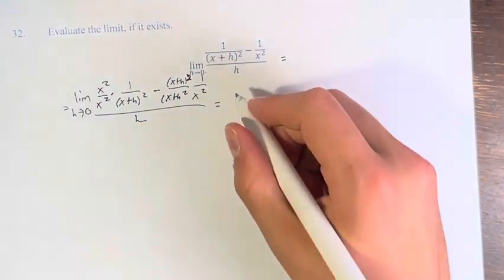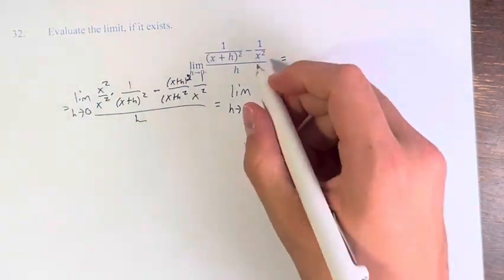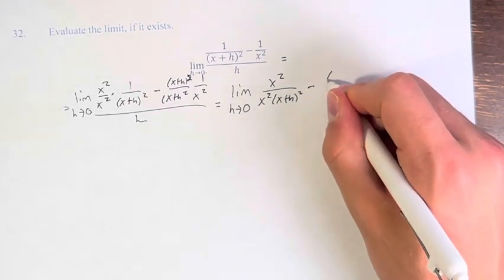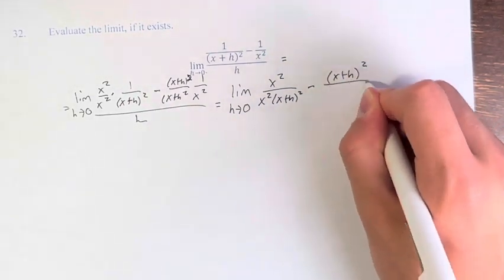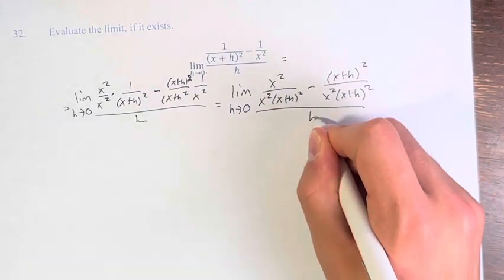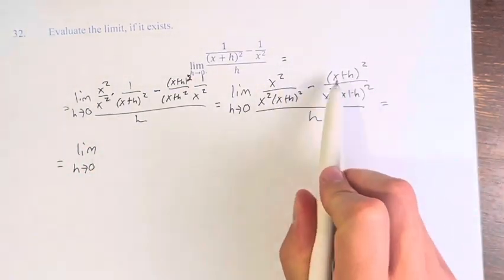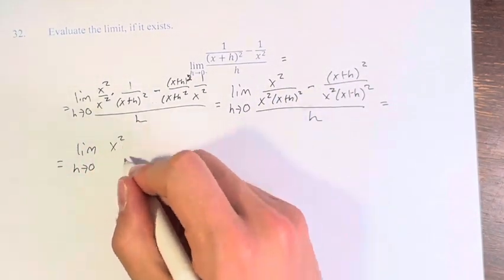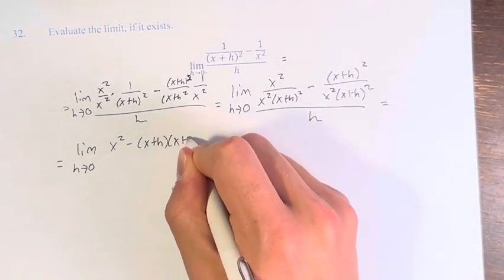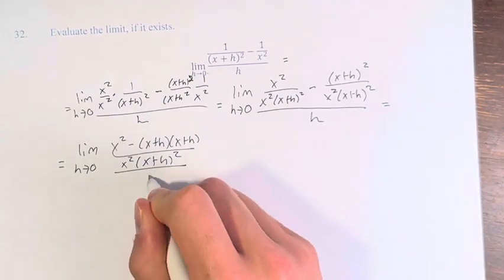We therefore have the limit as h approaches 0 of: x squared over [x squared times (x plus h) squared] minus (x plus h) squared over [x squared times (x plus h) squared], all divided by h. Now we can subtract these two fractions, giving us x squared minus (x plus h) squared over x squared times (x plus h) squared, over h.